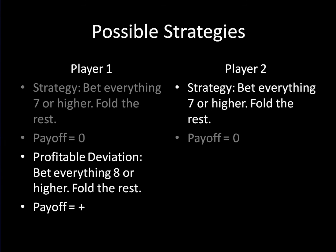And this last point is going to be pretty important. It appears that player one has a profitable deviation. If he decides to bet everything eight or higher, he can now expect to earn some positive amount of profit. Think of it this way: every time that player two is dealt a seven, she will lose. The rest of the time, on average, the two players will draw. Thus player one can make more money by changing his strategy, so the bet-on-seven-or-higher set of strategies for both players is not going to be in equilibrium.